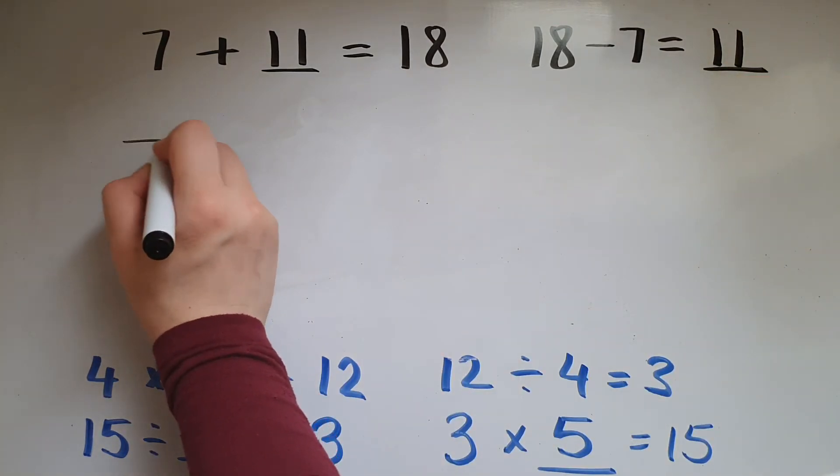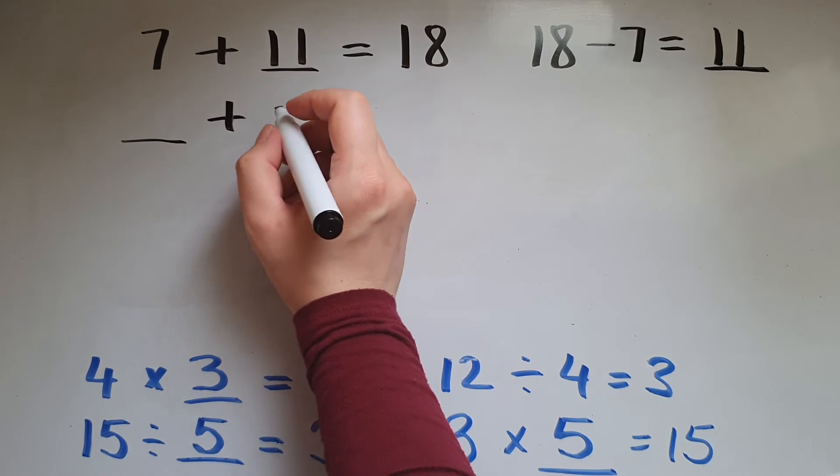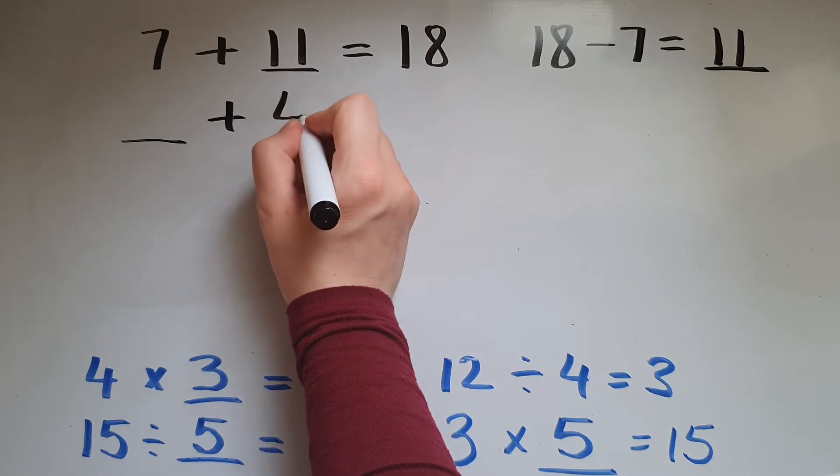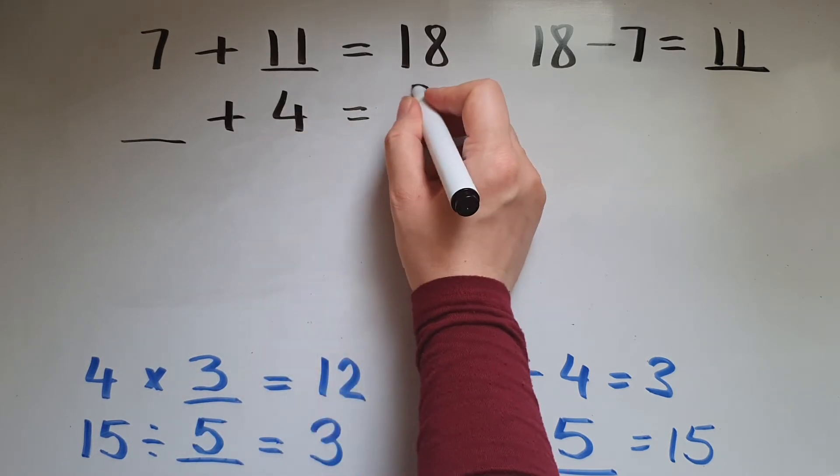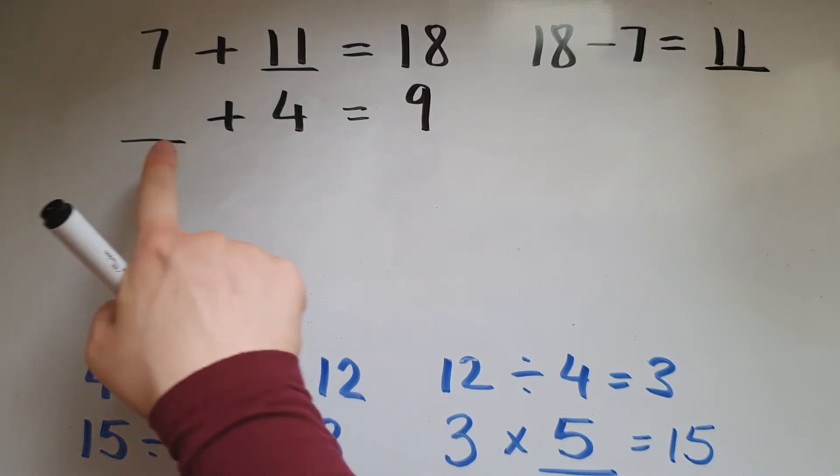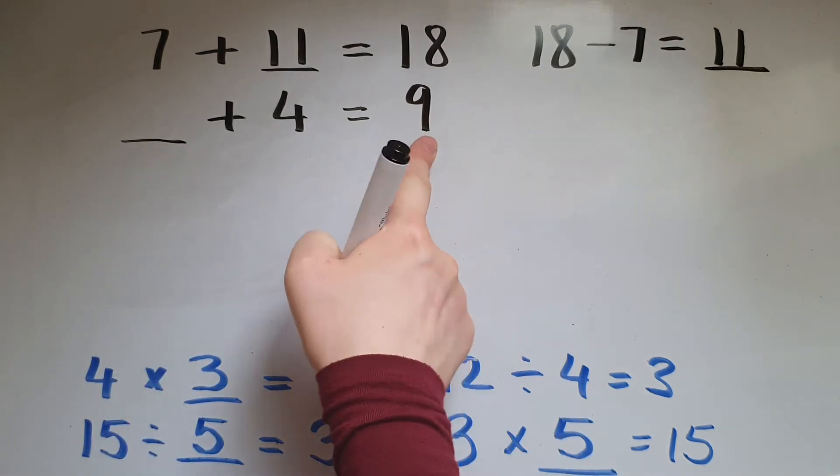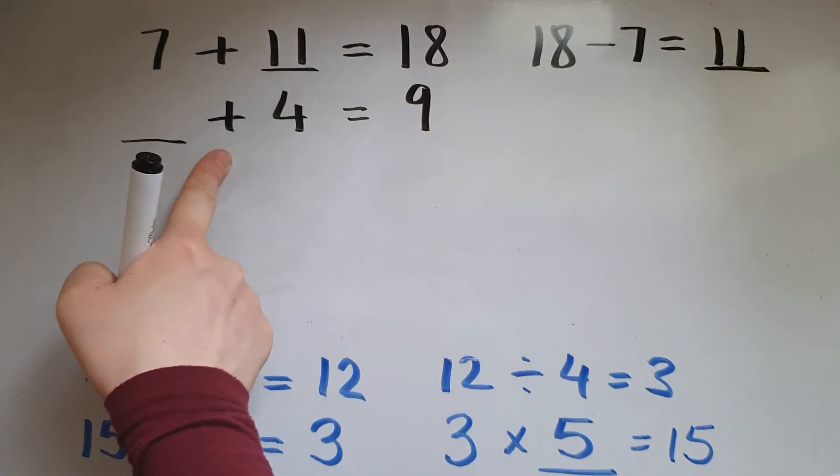A number add 4 gives me 9. So to find that number, what I do is 9 take away 4.